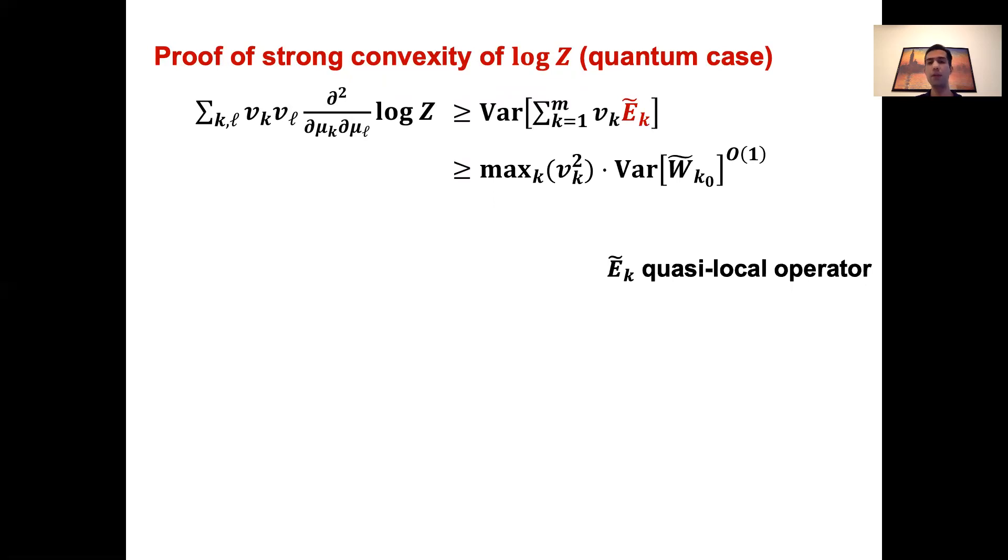Having this, we use multiple other structural properties of quantum many-body systems to show that one can further lower bound this variance by the variance of a single local term. We actually don't get the variance of one of the E-tilde terms, but roughly speaking, we get the variance of some other quasi-local operator to some constant power. This operator W-tilde_k is related to the previous operators in a complicated way, but the point is that this term is still almost like a local variance. And therefore, we can lower bound it by a constant. And then by losing a factor of 1 over m, we can relate this to the L2 norm of the initial vector.